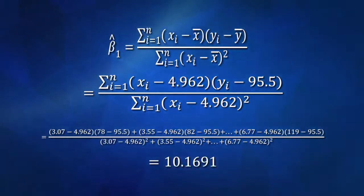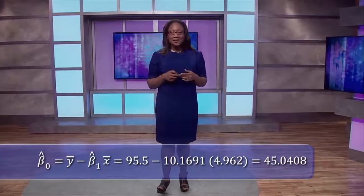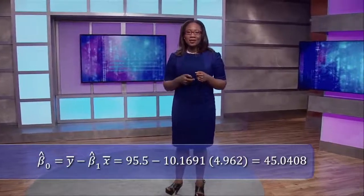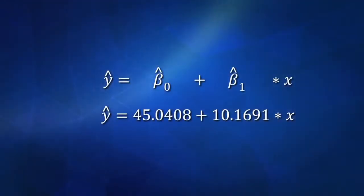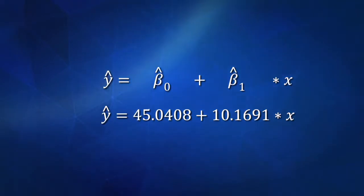Now we've got β̂₁, how do we solve for the y-intercept β̂₀? Remember the equation is ȳ − β̂₁ · x̄. Plugging in: 95.5 − 10.1691 × 4.962 = 45.0408. Now we're ready to see our regression equation: ŷ = 45.0408 + 10.1691x. We can use this regression line to predict the value of the response variable y for a specific value of the explanatory variable x — we call this a predicted value or fitted value.